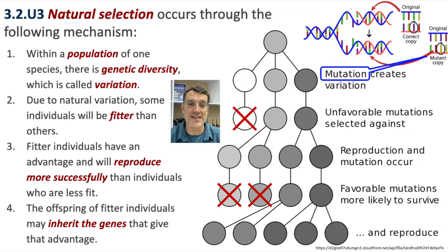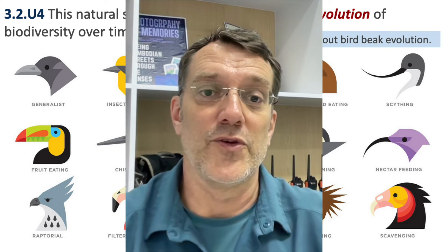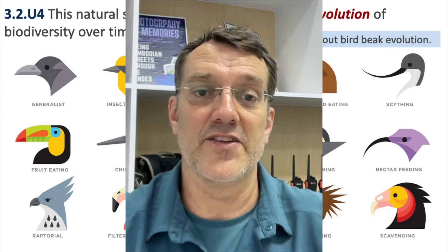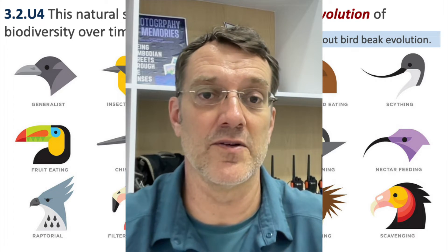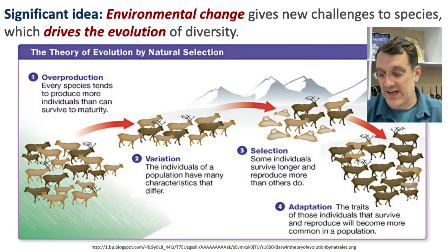You don't need to know the details of natural selection like you would for an IB Biology class, but you do need to know this general process. If you really want to get into the details, there's a link in the comments about evolution of the different shapes of bird beaks.